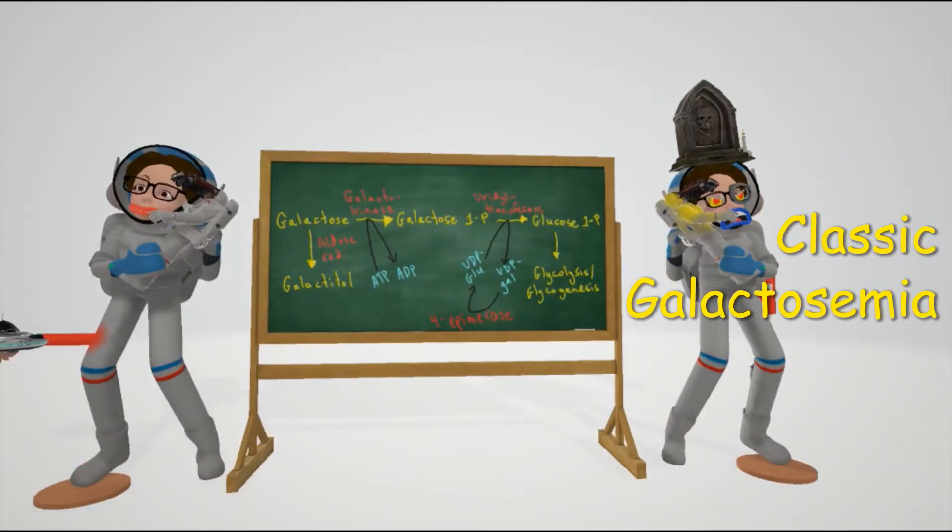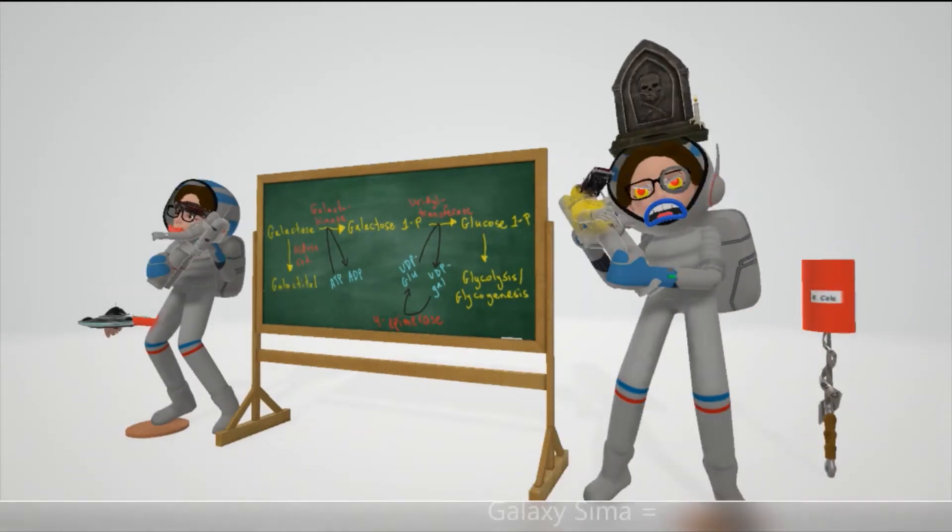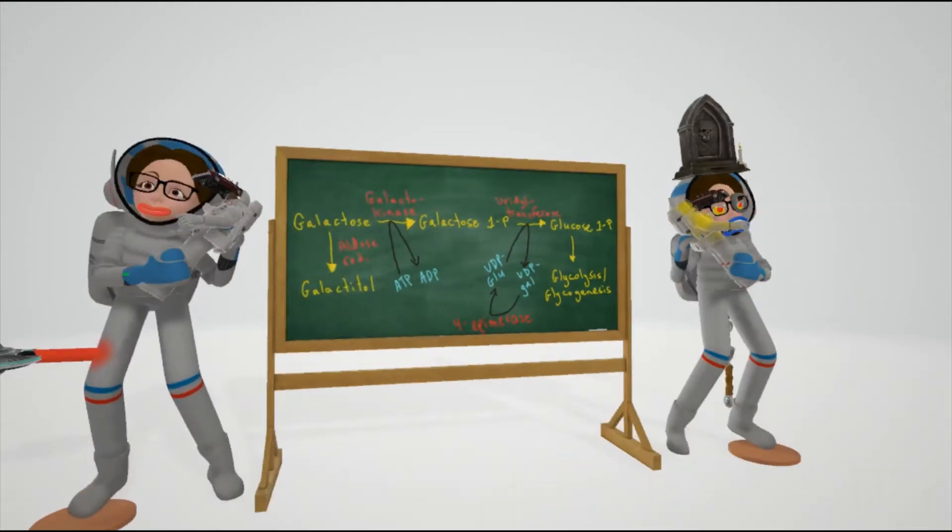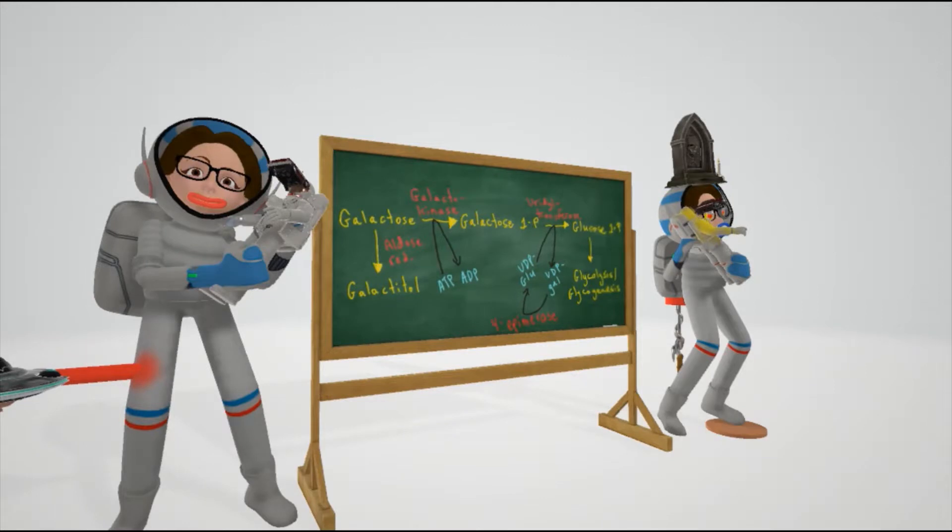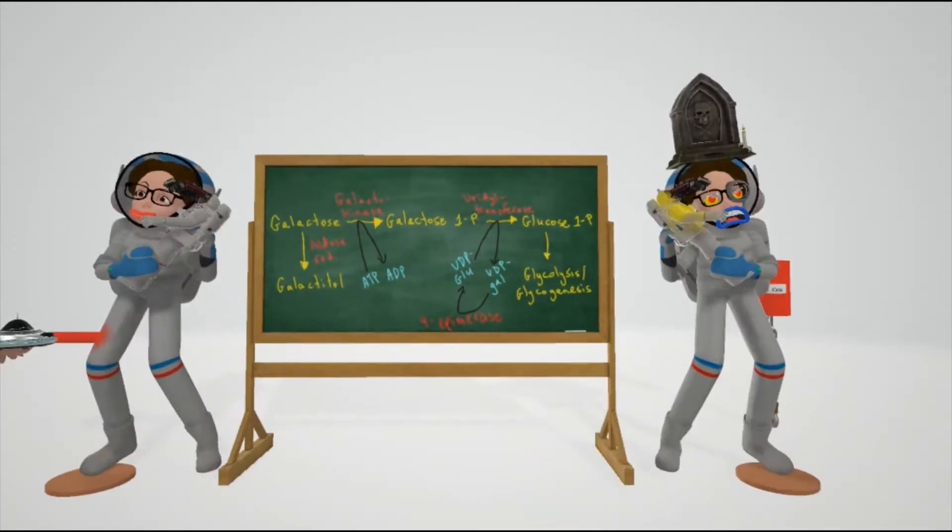This scene is about classic galactosemia, represented by the teacher on this side of the room whose name is Galaxy Simma. In the last video we spoke about galactokinase deficiency represented by this teacher over here, but here we'll be talking about classic galactosemia represented by Galaxy Simma.